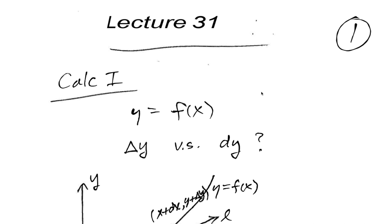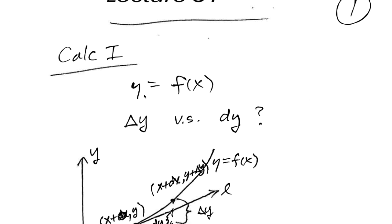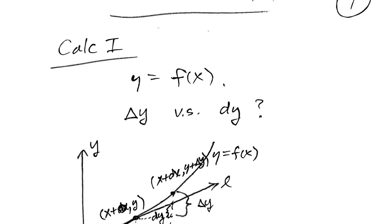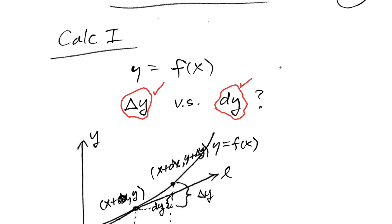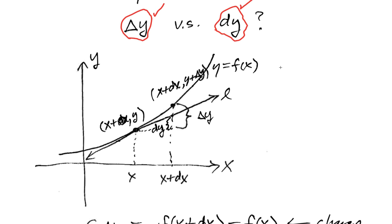Let's go back to Calc 1 just real fast here. Suppose that y equals f of x is a differentiable function at each point in its domain. Let's talk about the difference between the change in y, or the change in the function value, versus dy. Delta y is an actual change in the function. What's dy? You're using dy dx all the time. dy is the change in the tangent line approximation to the function at any particular point.